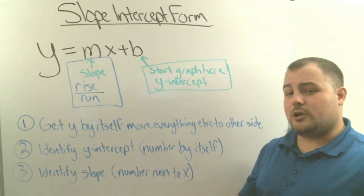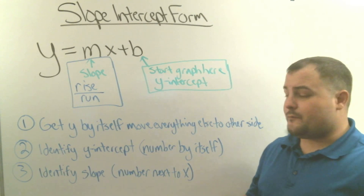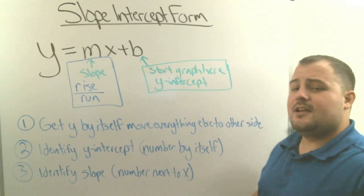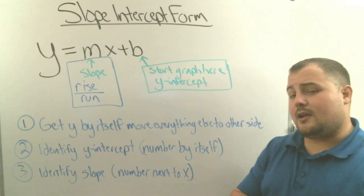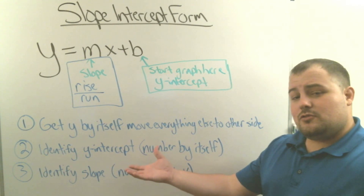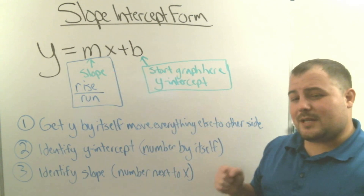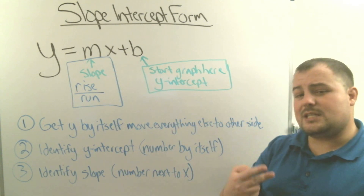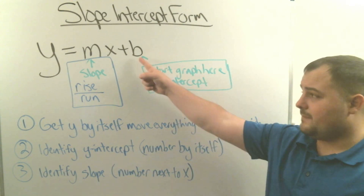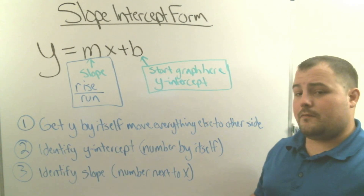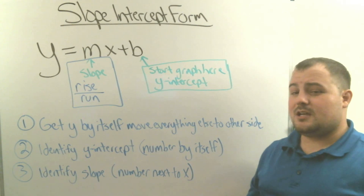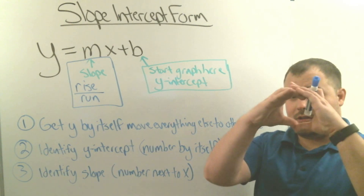Here are three things you want to know with slope-intercept form. First, you want to get the y by itself and move everything else to the other side. Sometimes to move numbers you add or subtract, and if it's next to the y, you multiply or divide. After you get y by itself in y equals mx plus b, the first thing you need to do is identify the y-intercept — it's the number that's by itself. If nothing's there, represent nothing with zero.